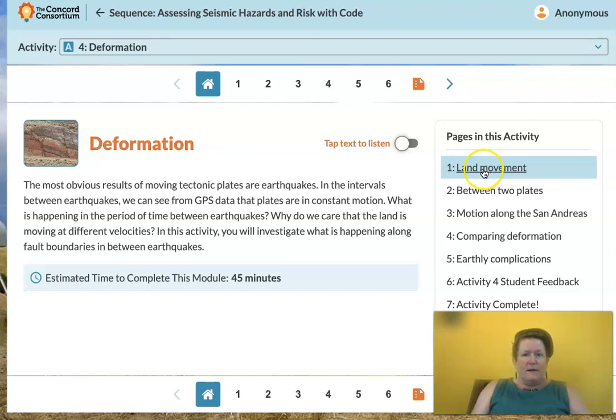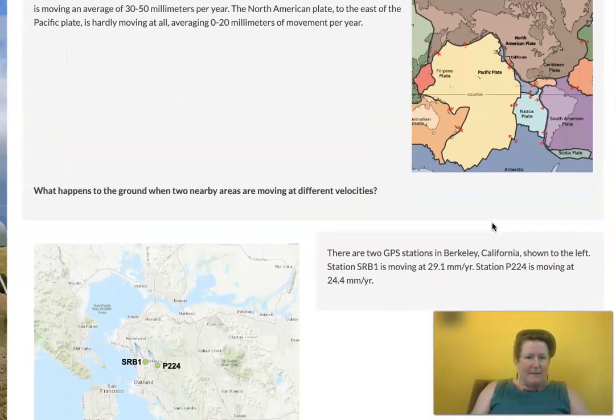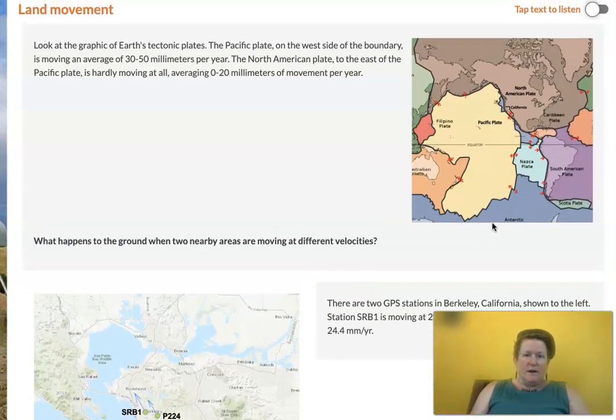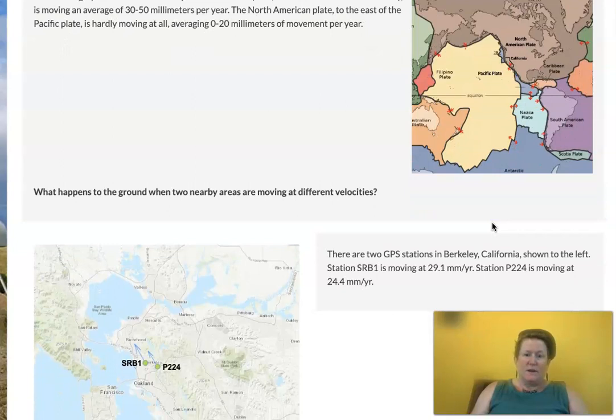So let's go look at land movement. When we look at the graphic of earth's tectonic plates, the Pacific plate on the west side of the boundary is moving an average of 30 to 50 millimeters per year. The North American plate on the east of the Pacific plate is hardly moving at all, an average of 0 to 20 millimeters of movement per year. So one plate, the Pacific plate on the west coast of California, mostly out in the ocean, is moving slower than the land plate that most of California sits on.